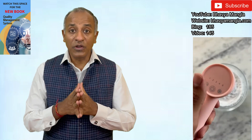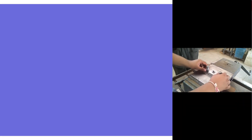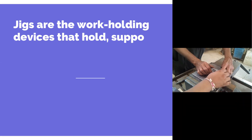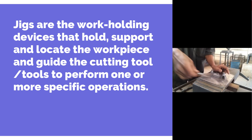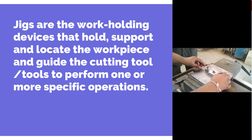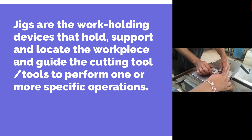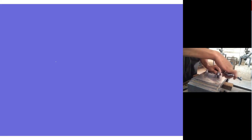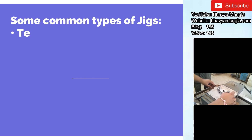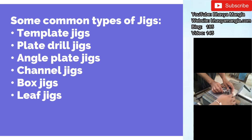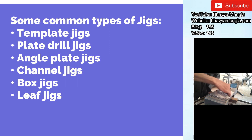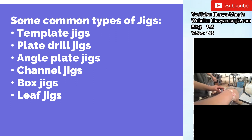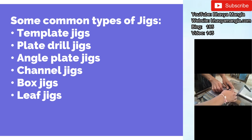From an industry perspective, a jig is primarily a work-holding device that holds, supports, and locates the workpiece and guides the cutting tool to perform any particular operation. There can be different kinds of jigs used in industry — some easy examples include a template jig, a plate drill jig, an angle plate jig, or other kinds of jigs.